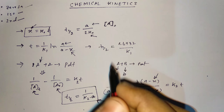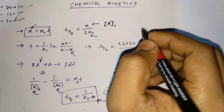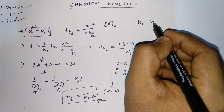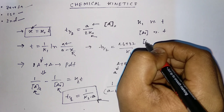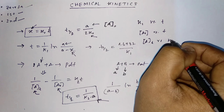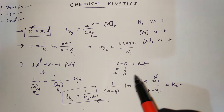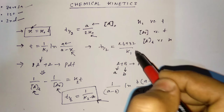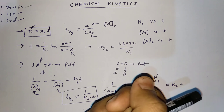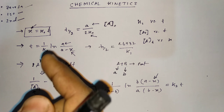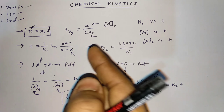You also need to remember the graphs for all first order, second order, and zeroth order reactions — for example, rate constant versus time, or initial concentration versus time, or concentration at time t versus rate constant. If you don't know those graphs, let me know in the comment box and I will definitely make a video on this. I have already suggested a book for this type of questions: 'Problems on Physical Chemistry' by Omla and Ghoshal.